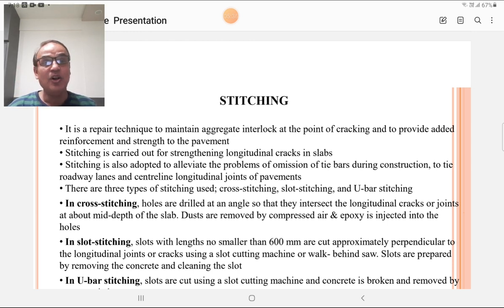Stitching is carried out for strengthening longitudinal cracks in the slab. It is used to stitch the longitudinal cracks and is also adopted to alleviate the problem of omission of tie bars during construction to tie the roadway lanes and centerline longitudinal joints of the pavement. It is used as an alternate treatment when tie bars are not provided. There are three types of stitching techniques: cross stitching, slot stitching, and U-bar stitching.